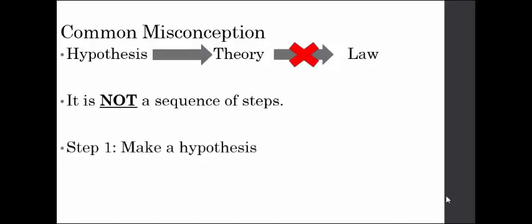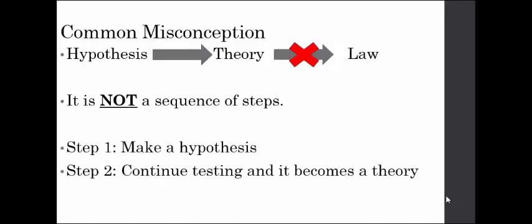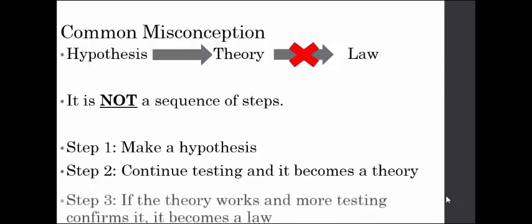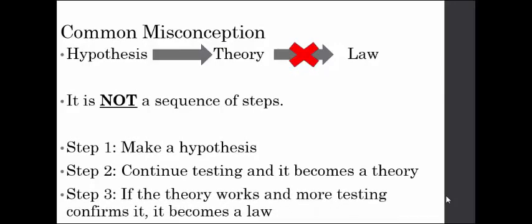Step one, you make a hypothesis and continue testing and it becomes a theory. Now, for that part, that's pretty accurate. It's from step two to step three that everybody has a misconception. If the theory works and more testing confirms it, it becomes a law. It's not a sequence of steps. That's not how it works at all.